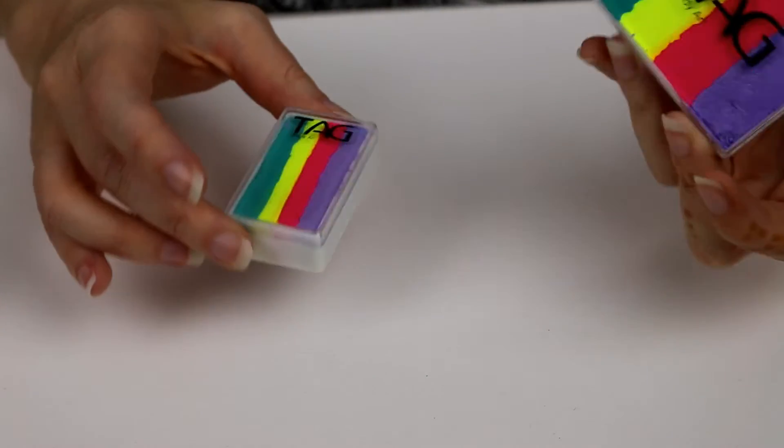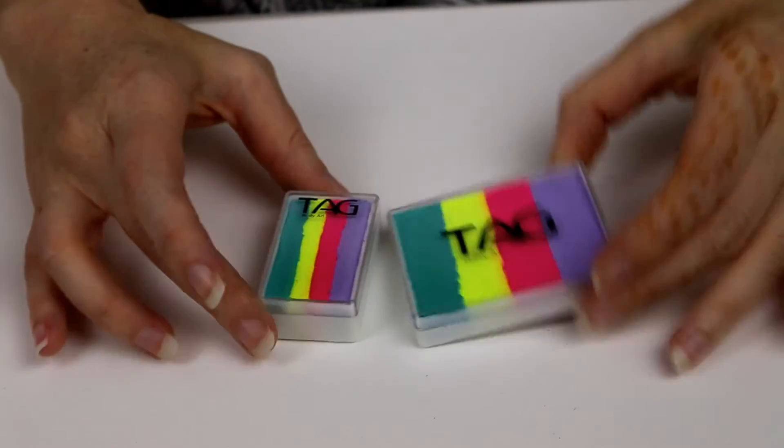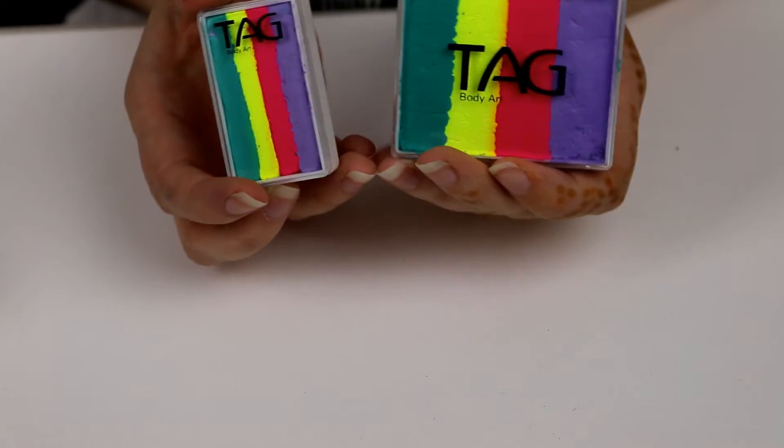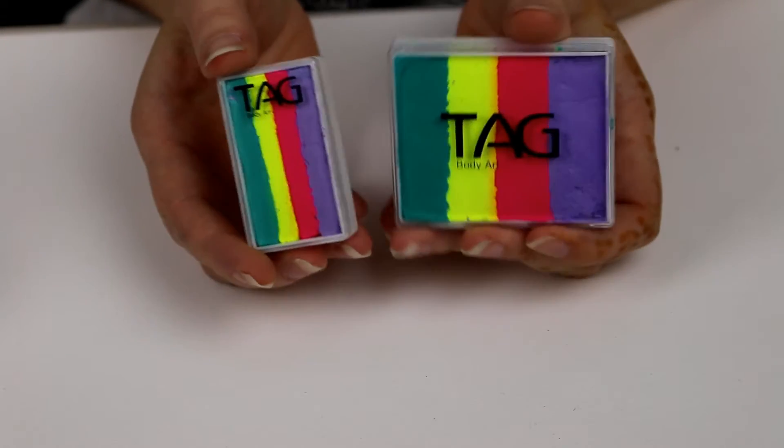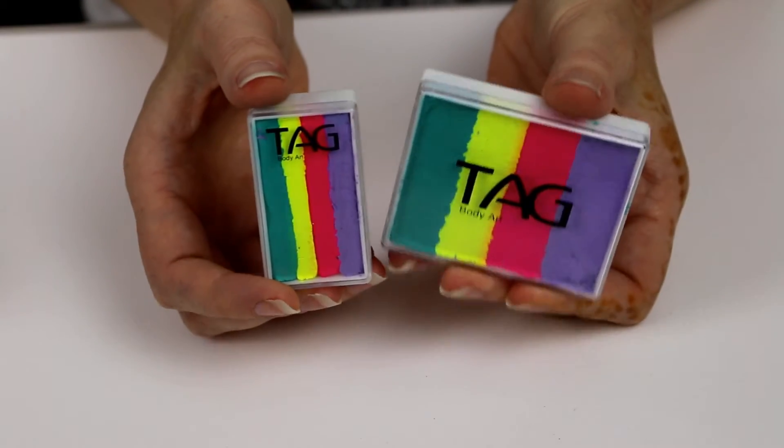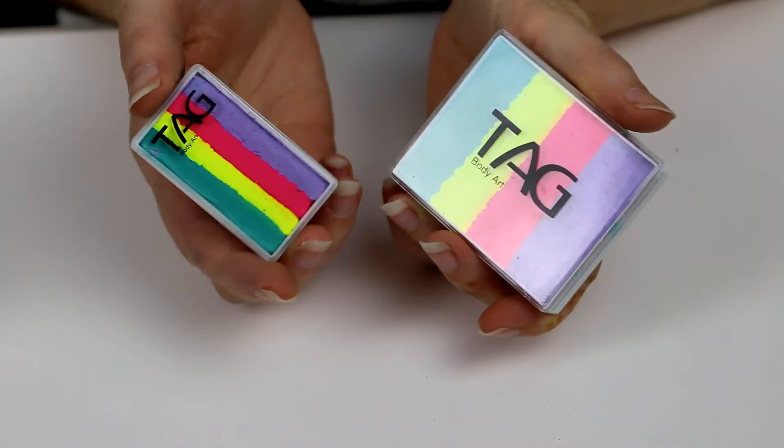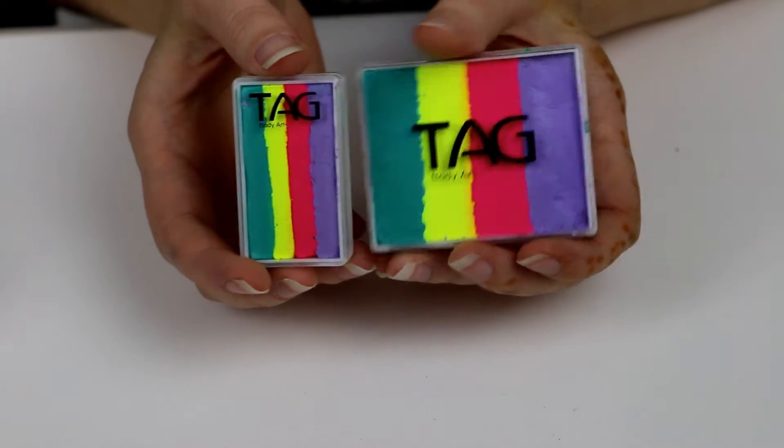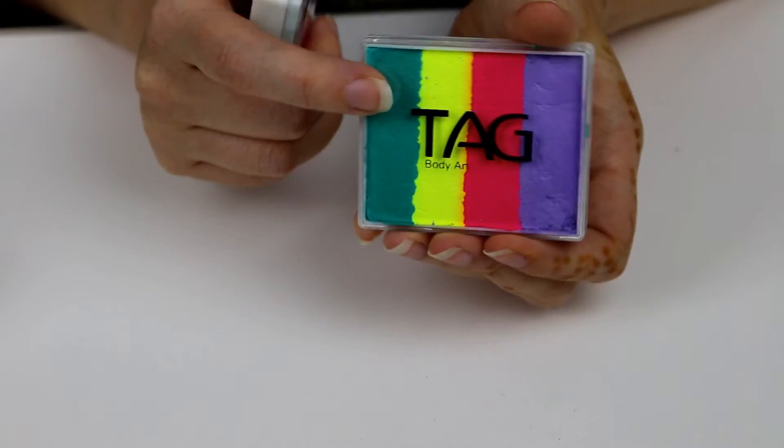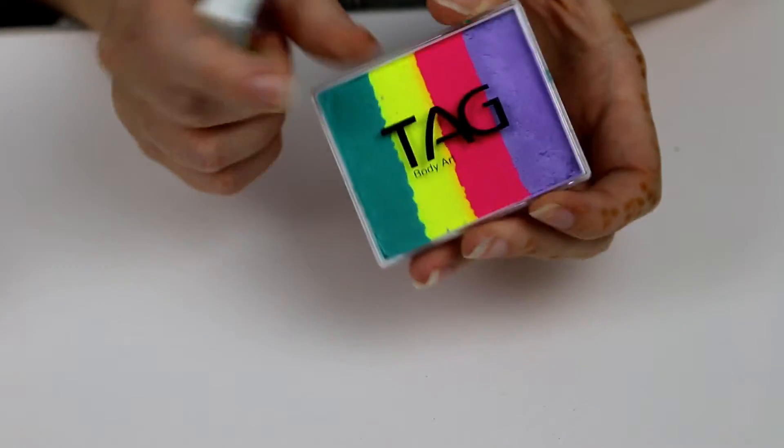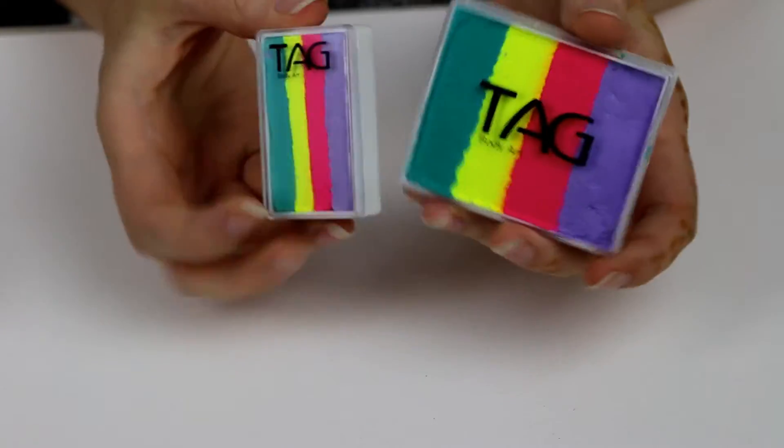I got some cool things from them. To start off, I'll show you these cool split cakes and one strokes that I got. These are called the Awesome Rainbow and they are a custom cake which Face Paints Online makes. They get TAG to make a special combination of colors just for them. These are really pretty.